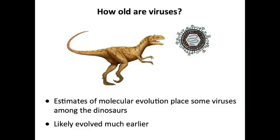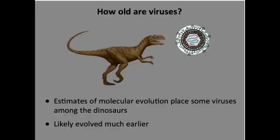How old are they? By sequencing genomes, we can estimate rates of molecular evolution, we can make phylogenetic trees of viruses, we can put them among the dinosaurs. In fact, one of the first to be placed there was a herpes virus. So dinosaurs had cold sores, probably.